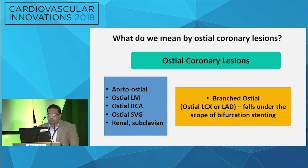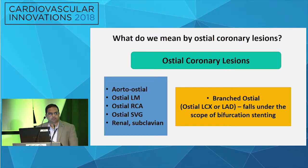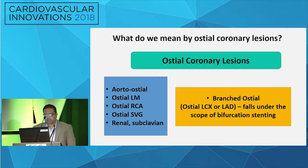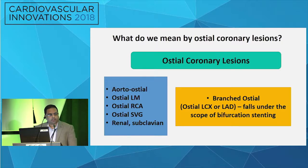What do we mean by osteocoronary lesions? Essentially, we're talking about either aorta-osteo or branched osteo lesions — osteo left main, right vein graft. The principles we learn from dealing with these lesions we can apply to renals, subclavians, and other peripheral vessels. In branched osteos, the osteo left circumflex or LAD really falls under the scope of bifurcation stenting, a lot of which you've already seen today.